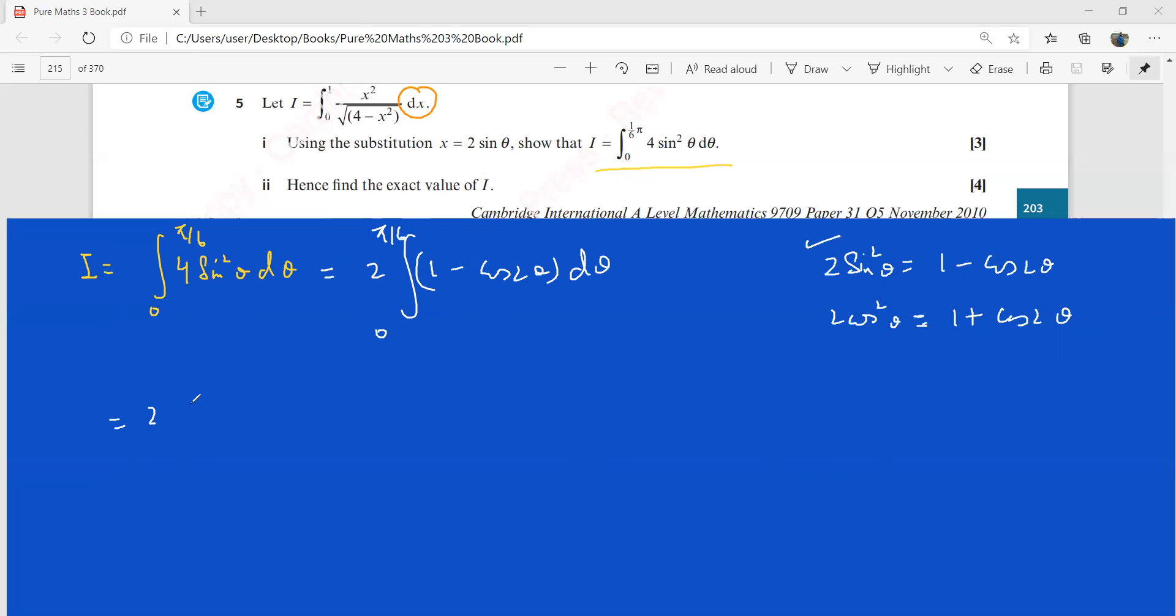So we integrate this, we apply the limit 0 to pi by 6. The integral of 1 is theta, and this one is going to be sine 2 theta over 2. You plug in the limits here. So you get 2 into this pi by 6 minus 1/2 sine 2 pi by 6, which makes it pi by 3, minus when you put 0, both of them are going to be equal to 0.